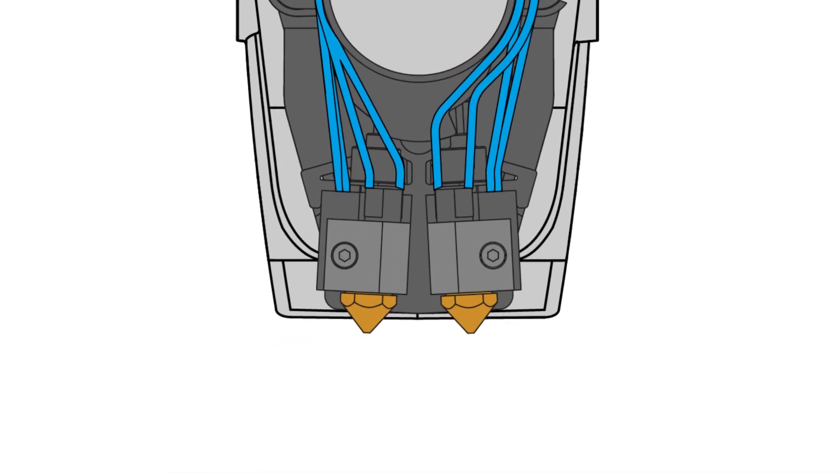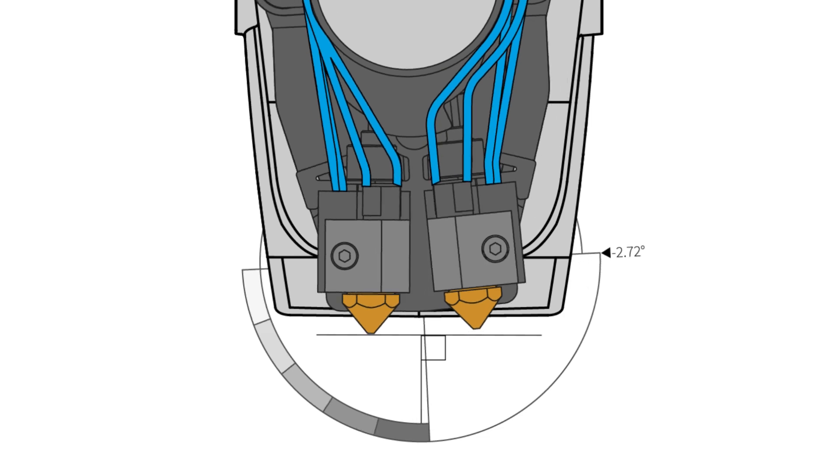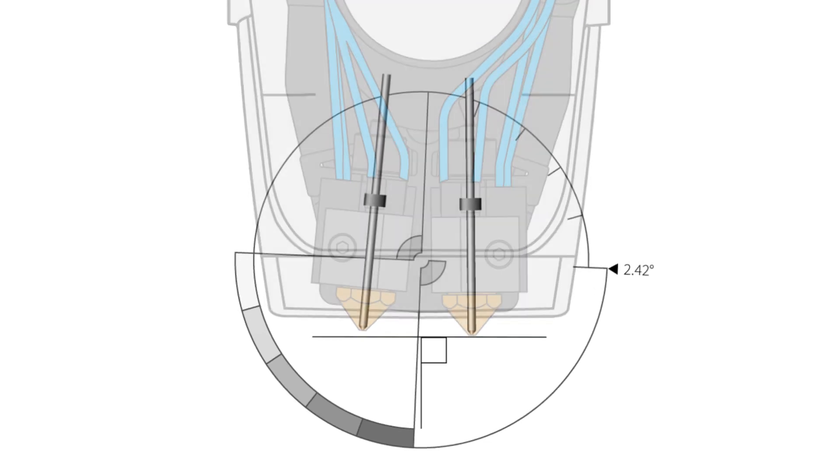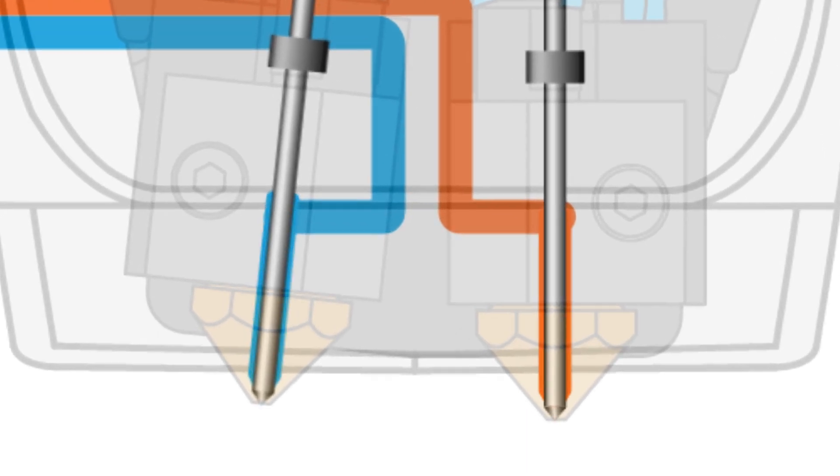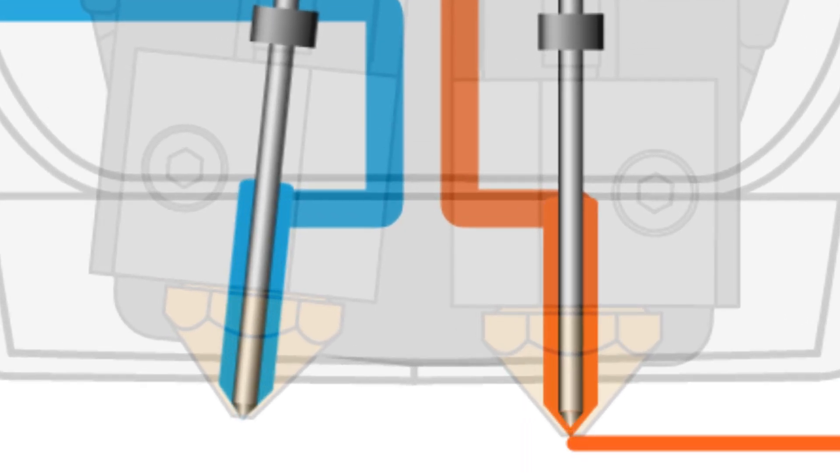Each nozzle has a separate heater control so Robox Dual can create parts using materials with different temperature requirements. The needle valves control flow so there is no stringing or ooze.